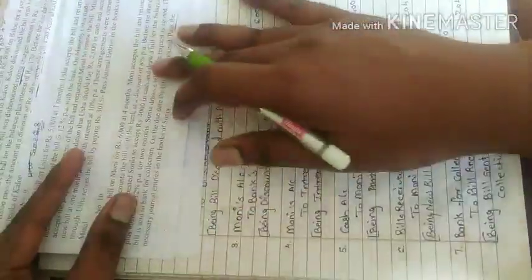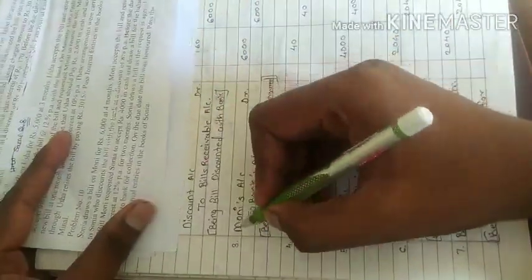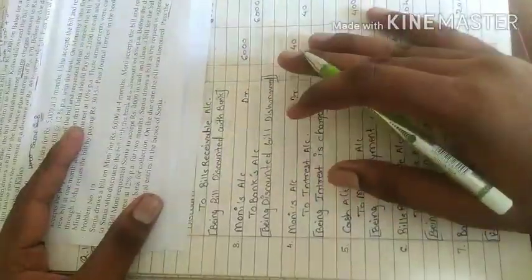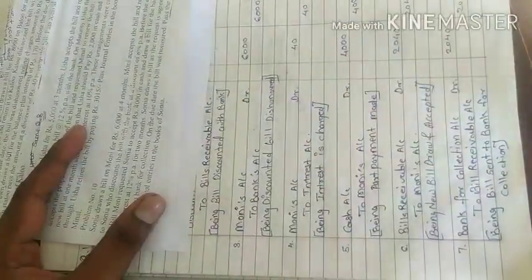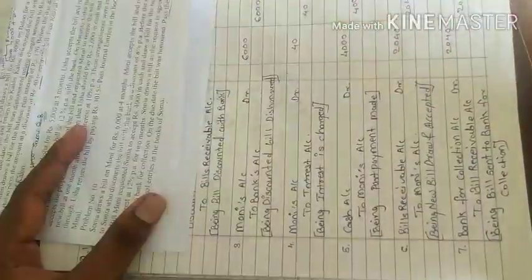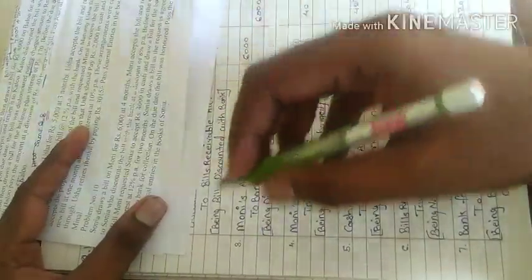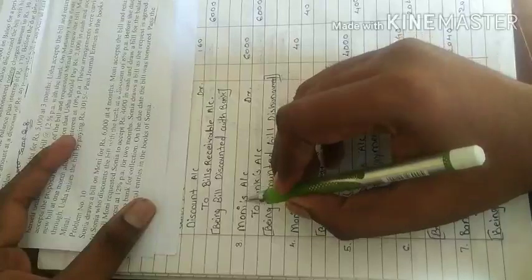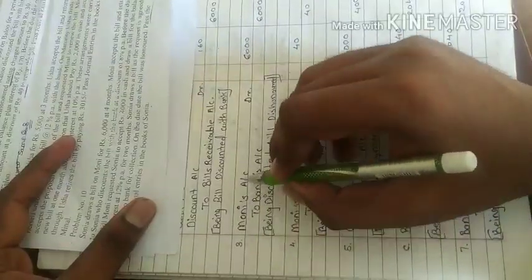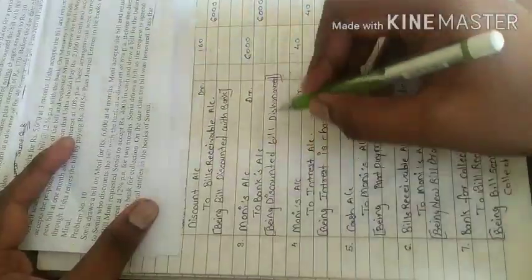So we will do calculation. So first the bill cancel, old bill cancel. So cancel, dishonor, drawer account debited to bills receivable account. Money, Money account to bank account. Bill who has bank, so bank 6,000, discounted bill dishonored.